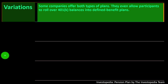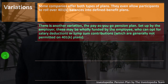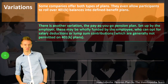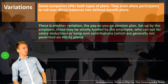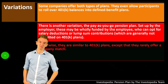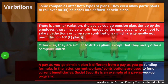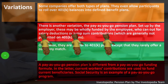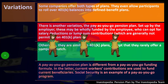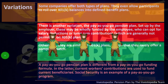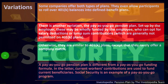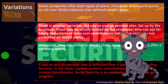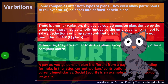Some companies offer both types of plans and may allow participants to roll over 401k balances into defined benefit plans. There is also the pay-as-you-go pension plan, set up by the employer, which may be wholly funded by the employee via salary deductions or lump sum contributions. These are similar to 401k plans except they rarely offer a company match. Social Security is an example of a pay-as-you-go program.